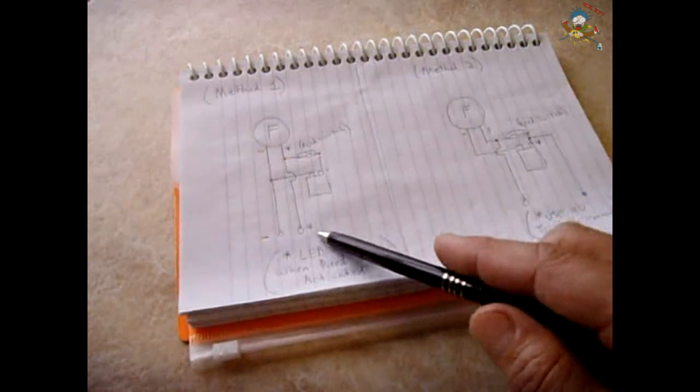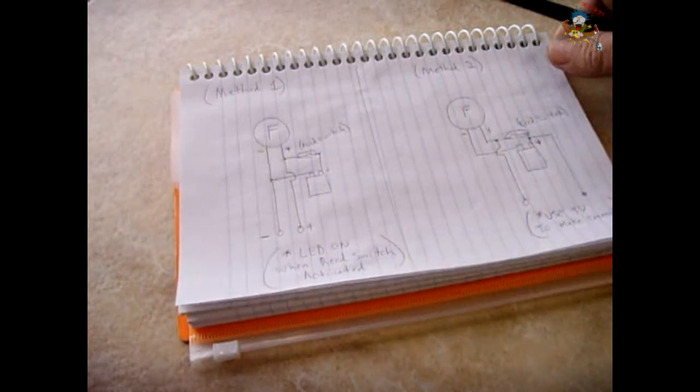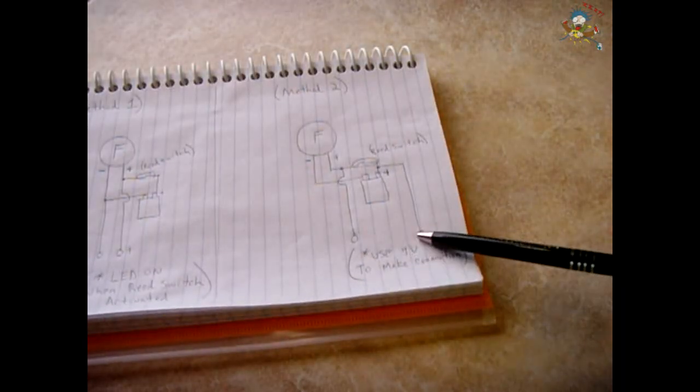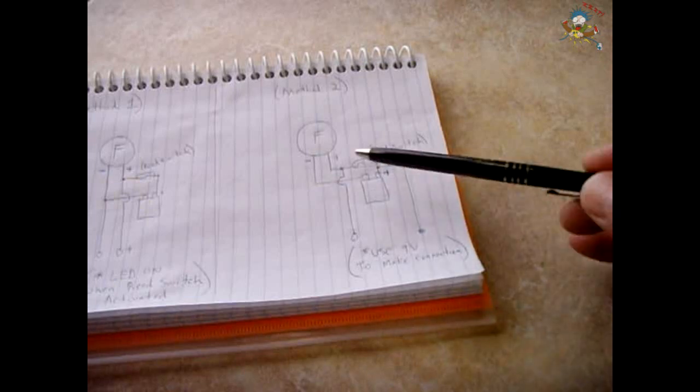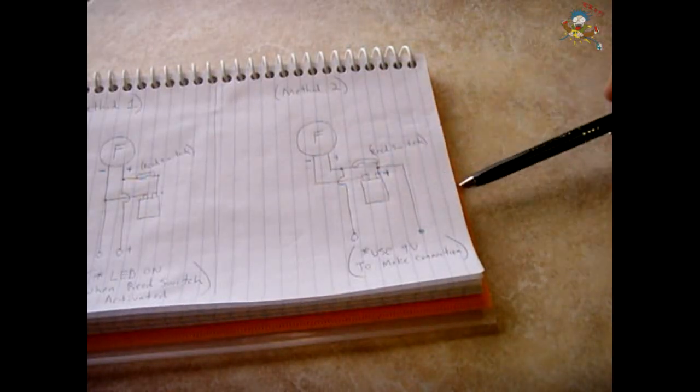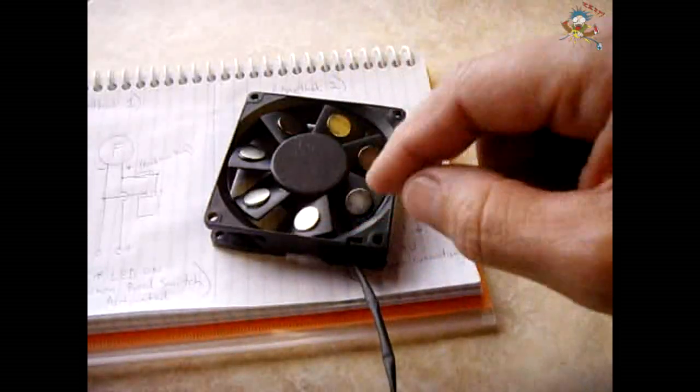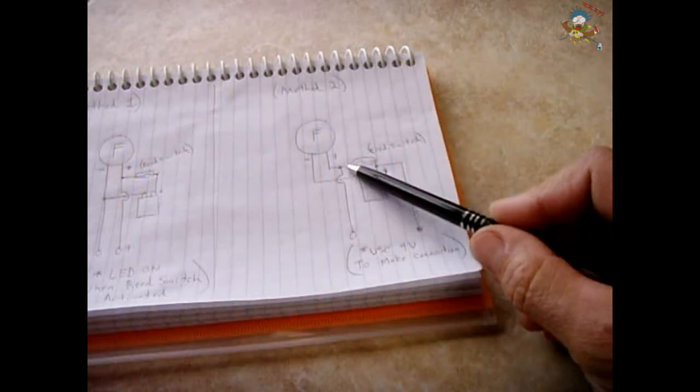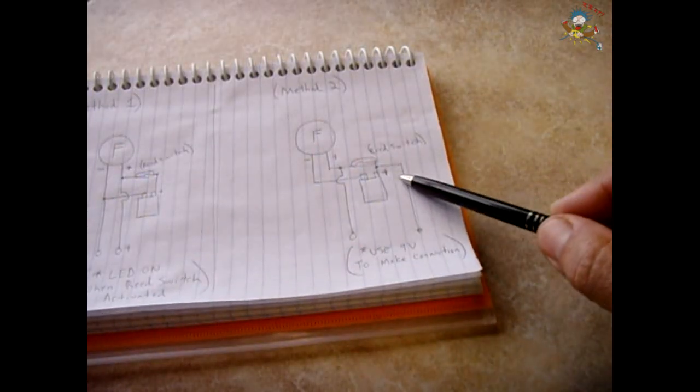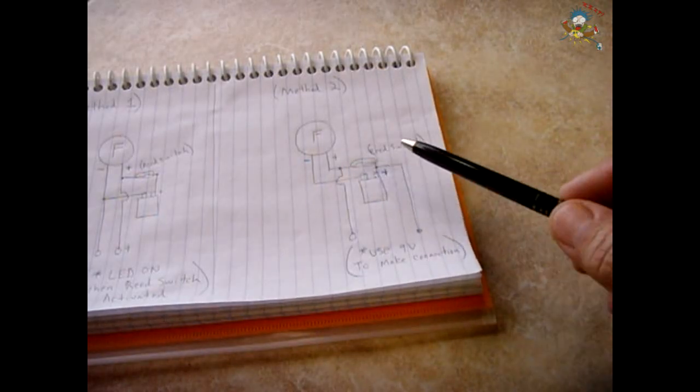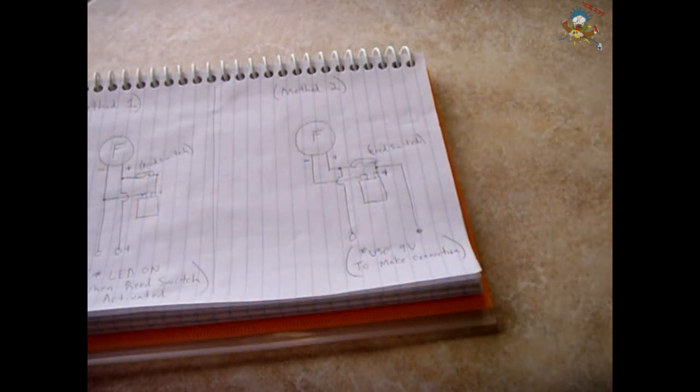He uses a magnet in close proximity to the fan like that and it comes on. He shows you see it works with the magnet and it works with the battery. That's very easy to do because what you have is these two wires in parallel with the reed switch. So now the reed switch will turn it on or a battery.